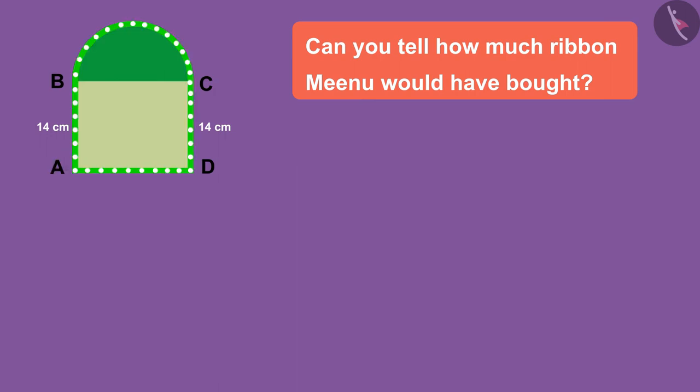Take a round of the figure starting from point A. You can see that it takes 14 centimeters of ribbon to go from A to B because AB is a side of a square. Can you tell how much ribbon will be on the semi-circular part?